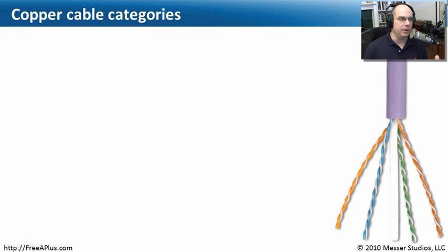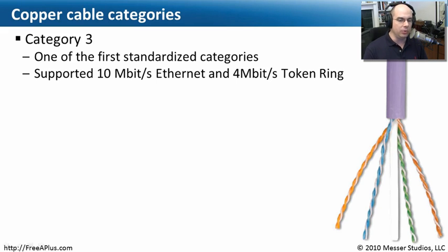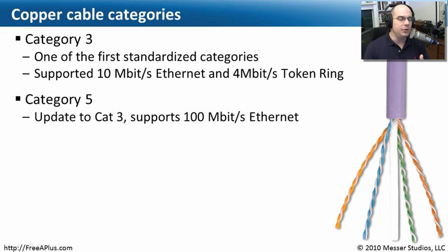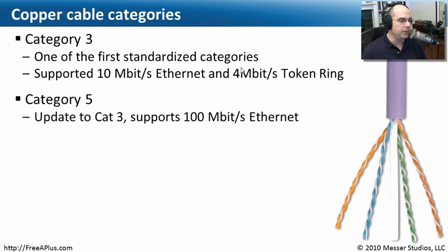Not all cables are created the same — there are different categories of cables, and the networking industry has categorized cables to work in a certain way. One of the most common older styles was Category 3. When we first were putting in 10 megabit ethernet and 4 megabit token ring, a Category 3 cable was built with specifications that could handle the electrical signals those particular networks required. Those were relatively slow networks, and we realized that if we were going to build faster, higher frequency networks, we needed cabling that could handle those speeds. We needed to give it a category name so we could say, if you're going to have a 100 megabit ethernet, make sure you have a minimum of a Category 5 cable.